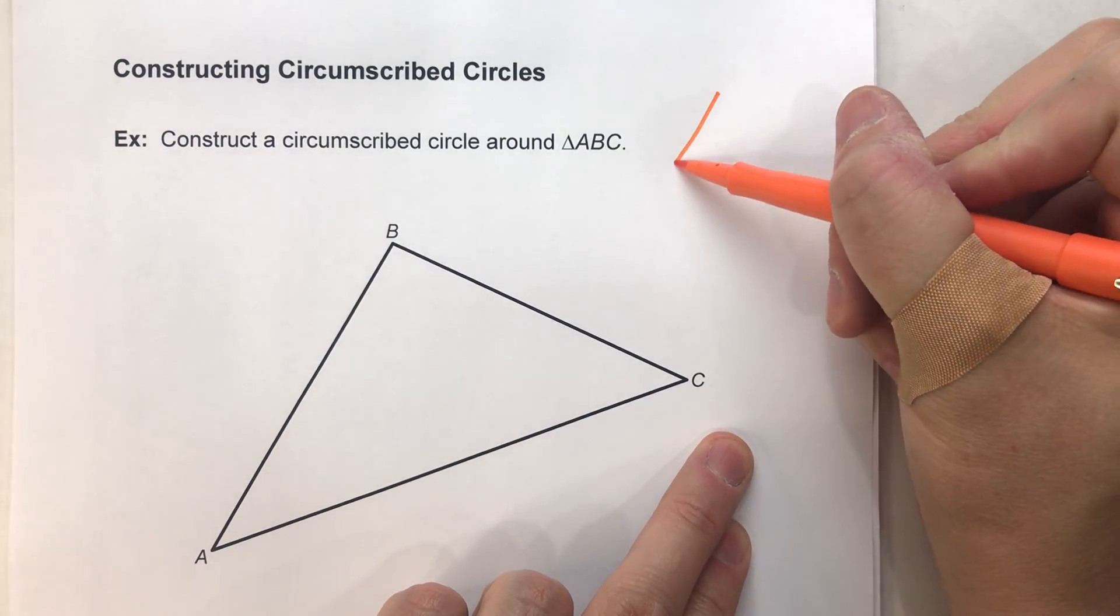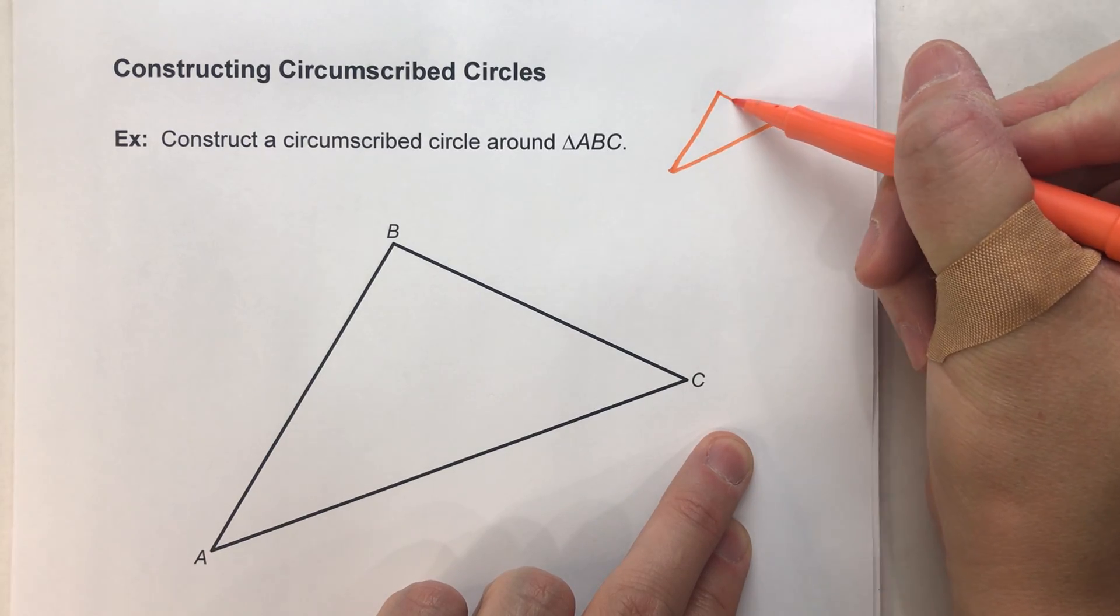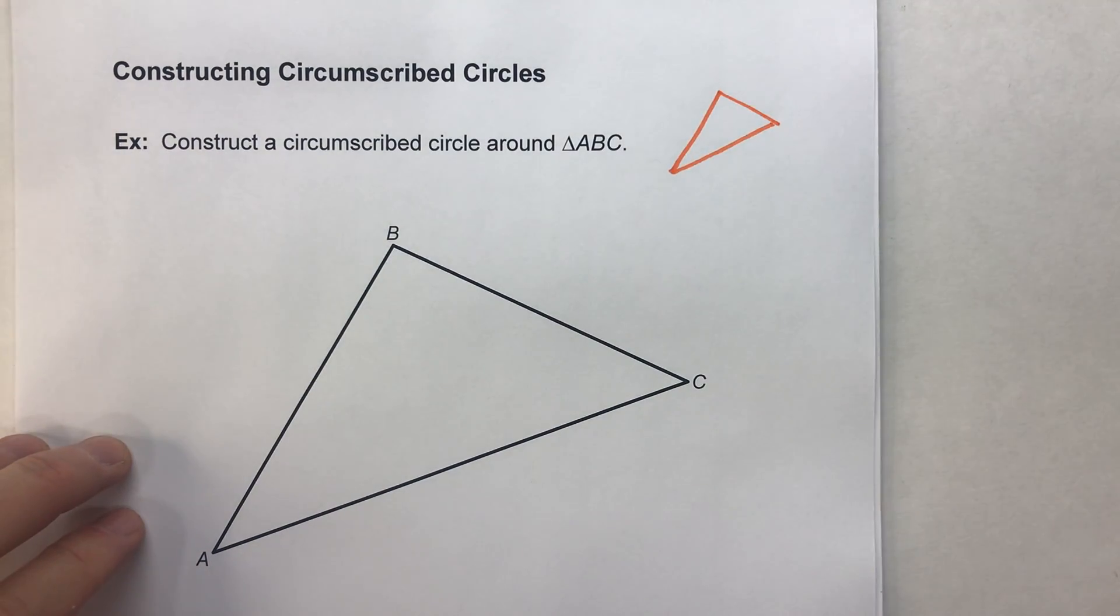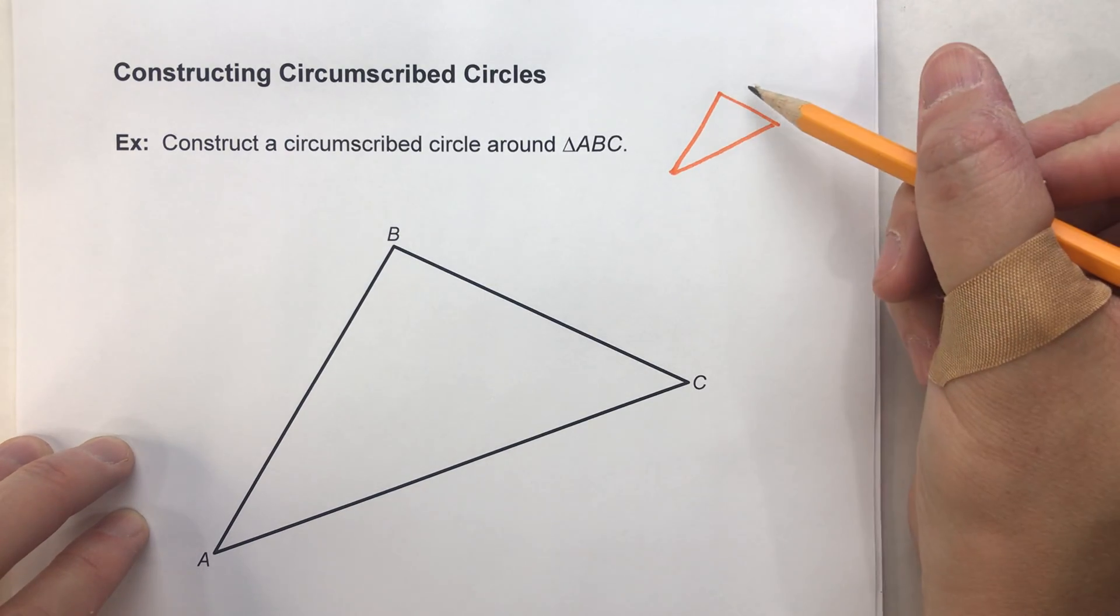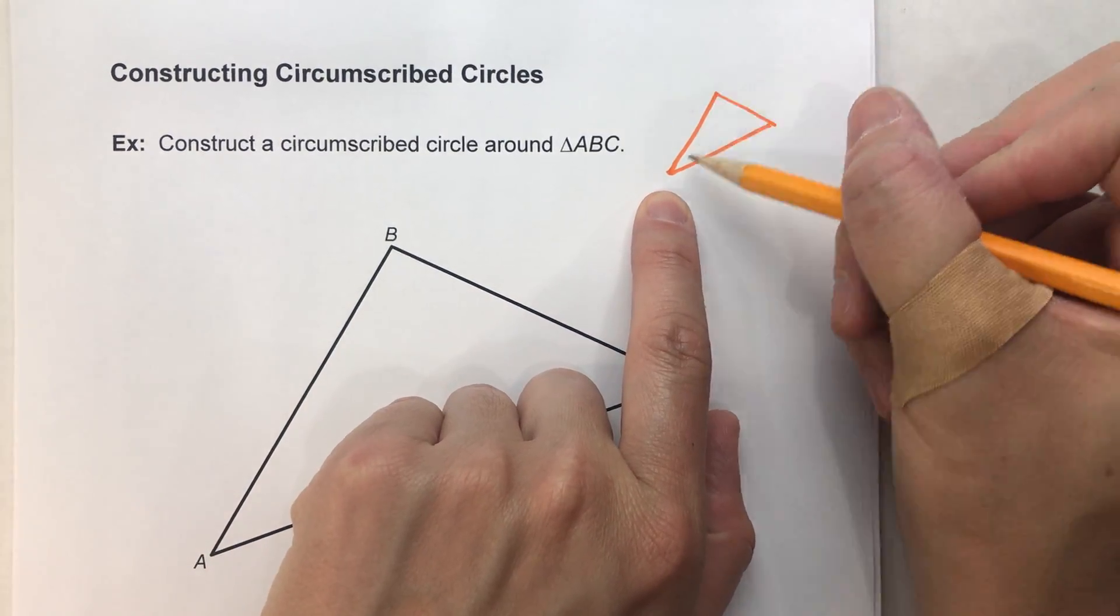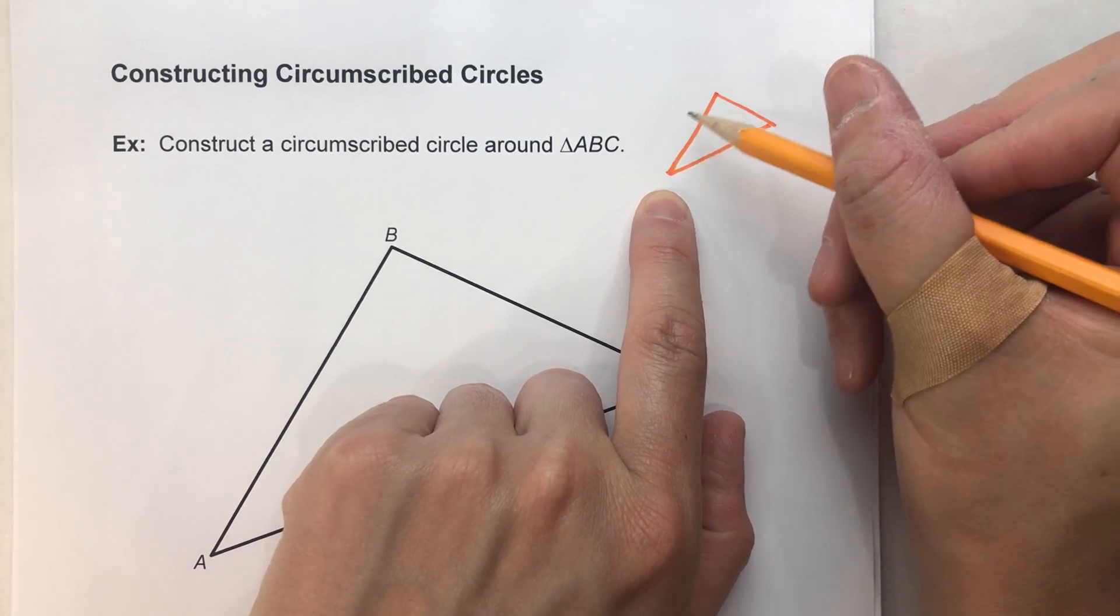So I'm going to sketch our triangle here. Now a circumscribed circle is a circle that goes around exactly around this triangle, and hits the triangle in all three vertices.